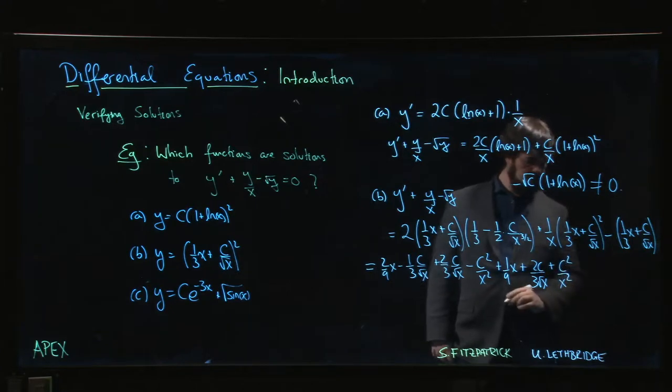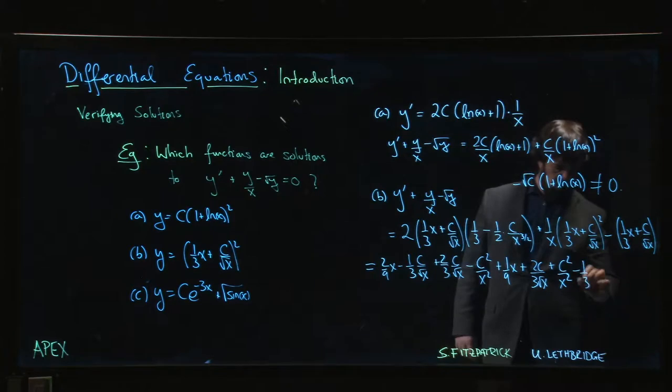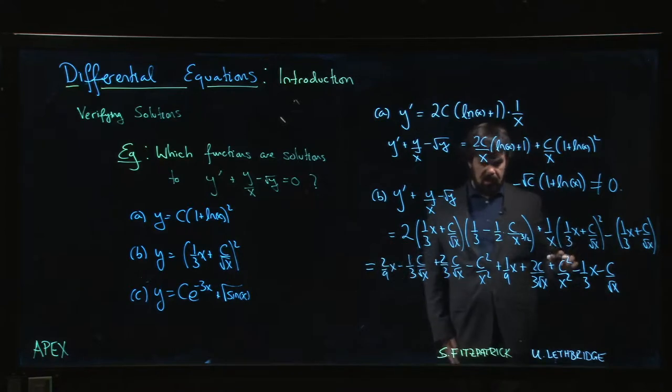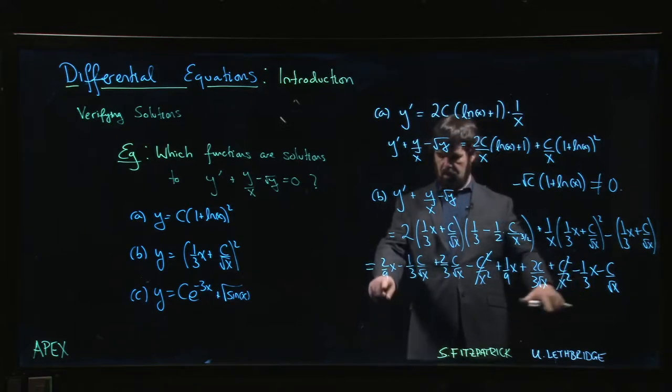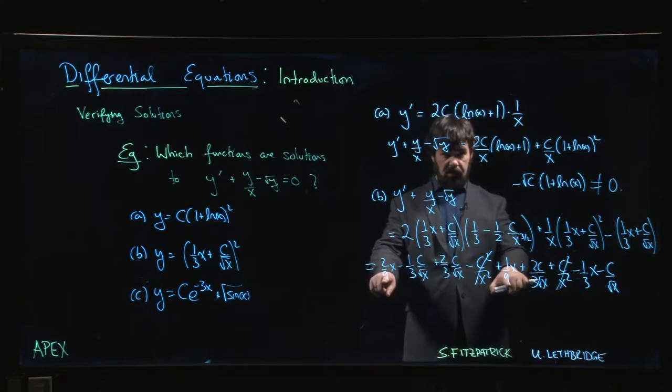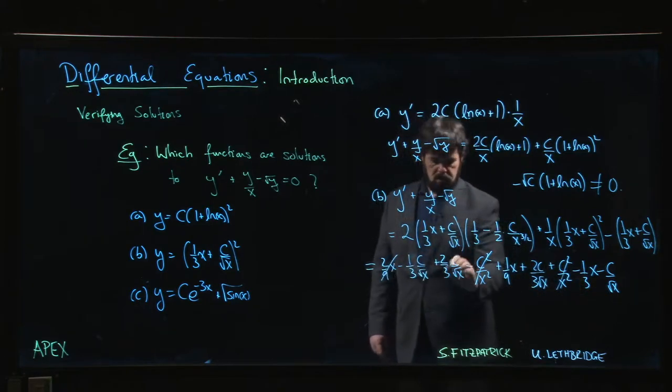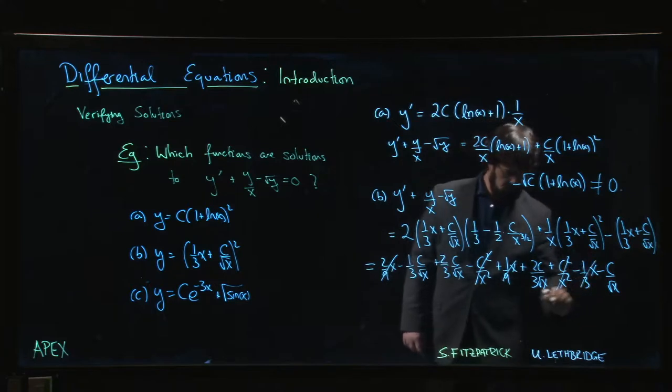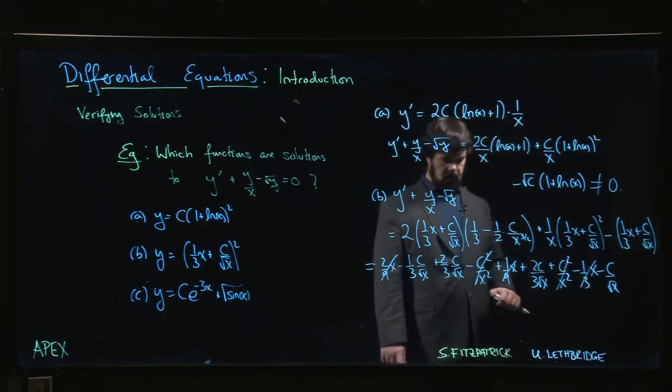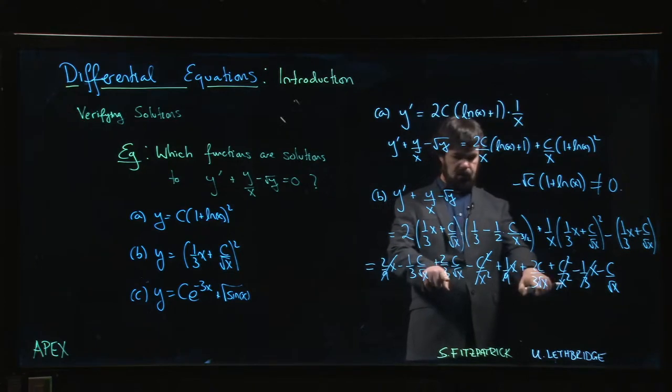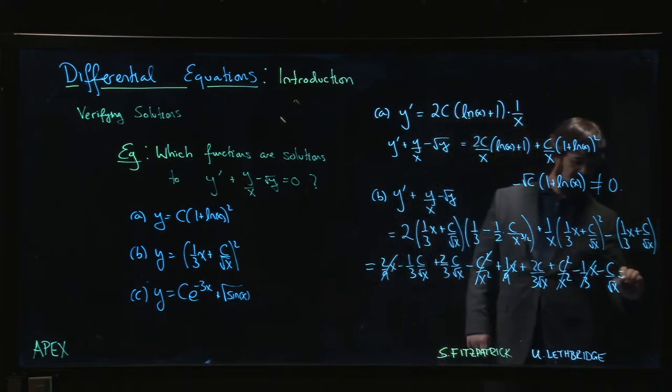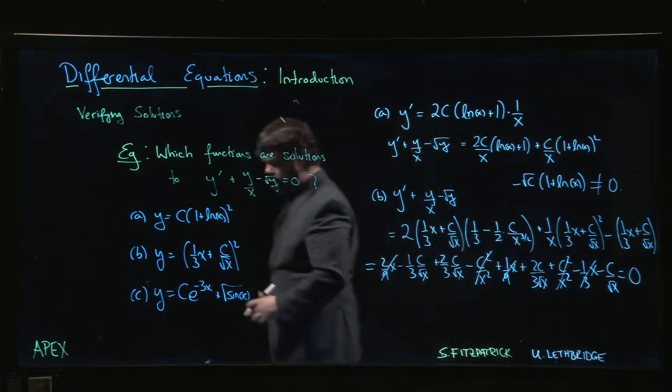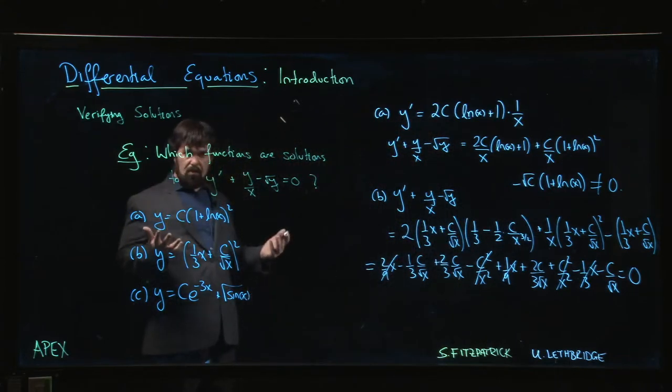Minus 1/3 x minus C over root x. And now we look to see if anything cancels. Yes! 2/9 x plus 1/9 x is 3/9 x - that's 1/3 minus 1/3. And then let's see, 2/3 C over root x, 4/3 C over root x minus 1 - minus 4/3. Yes, it all cancels out! We get zero. Awesome!